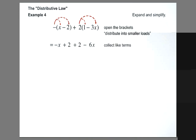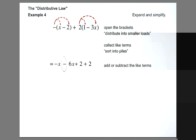We're going to collect like terms. We're sorting it into the piles for the family. So the negative x and the negative 6x belong together. The positive 2 and the positive 2 belong together in the same pile. Now I'm going to add or subtract the like terms. Negative 1x take away another 6x gives us negative 7x. Positive 2 plus 2 gives us positive 4.